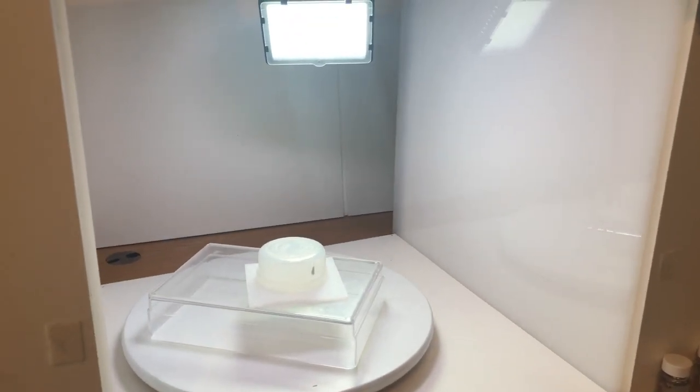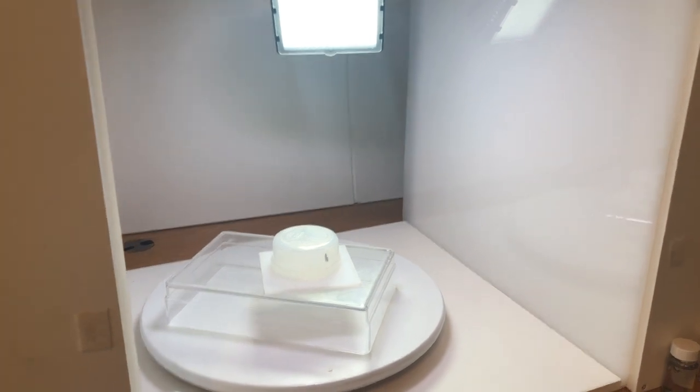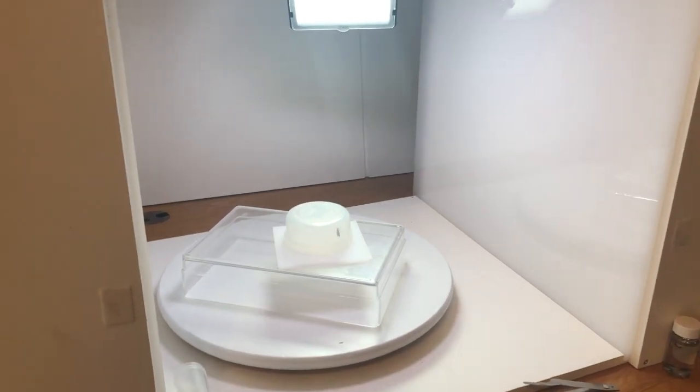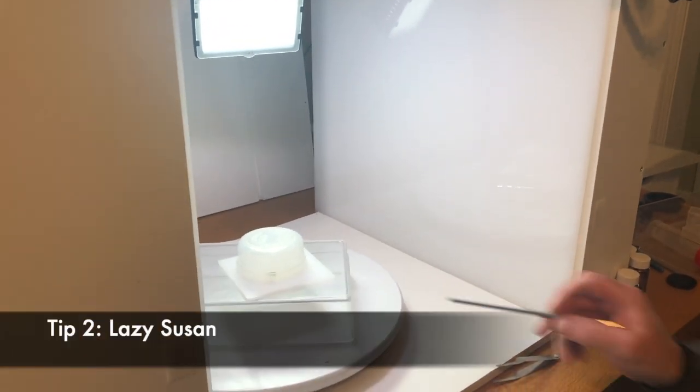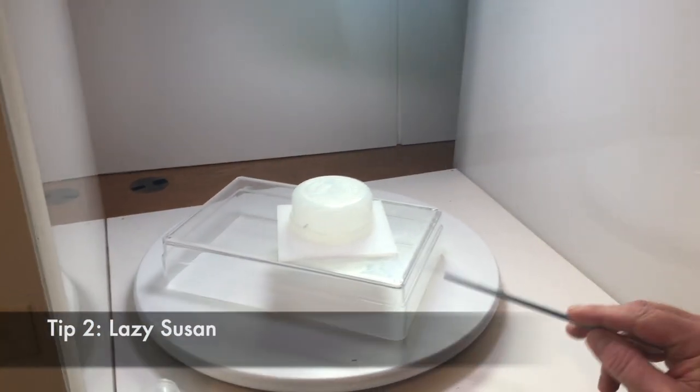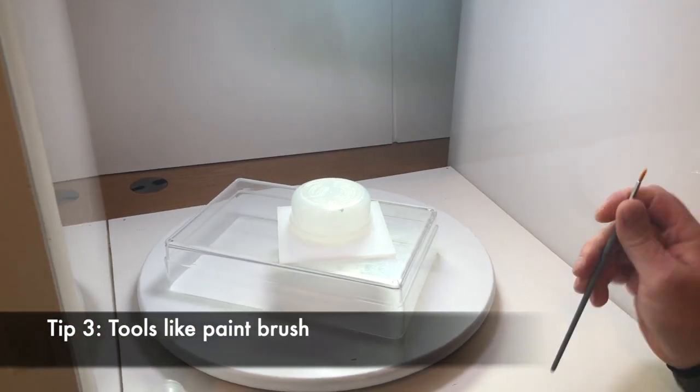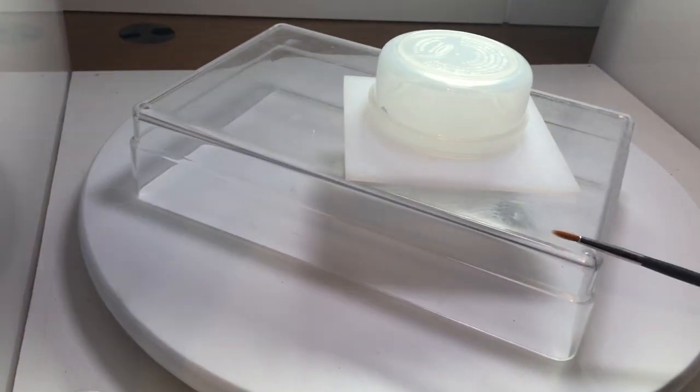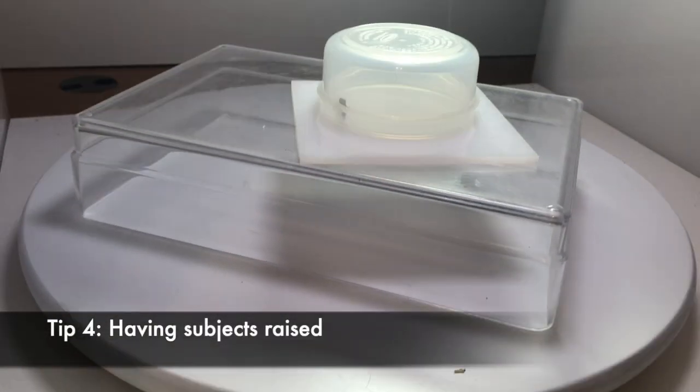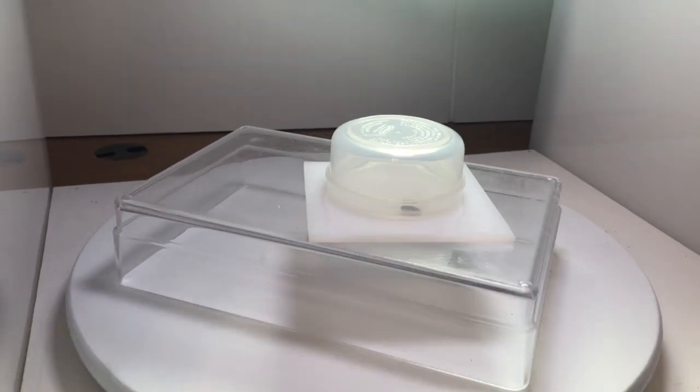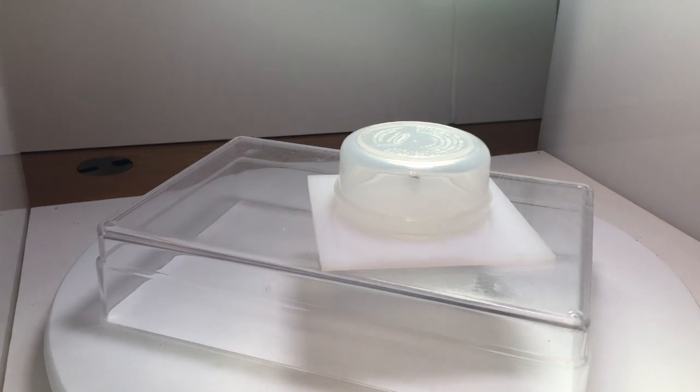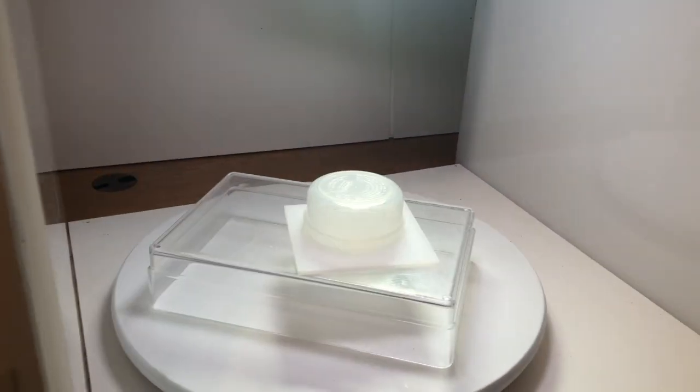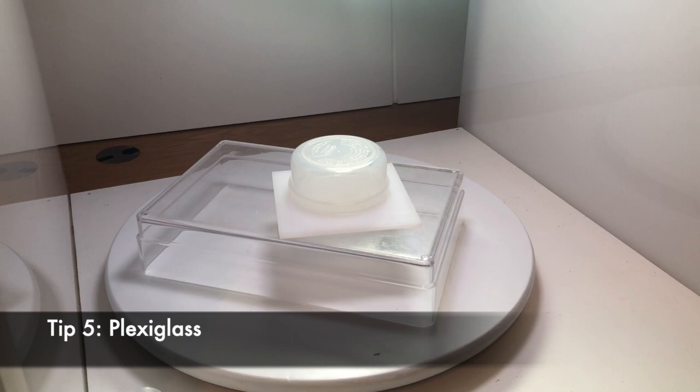So the five tips would be: patience, a lazy Susan, tools like a paintbrush, having the objects or subjects raised so light can go underneath, and the plexi—frosted plexiglass or perspex is one tool I use.